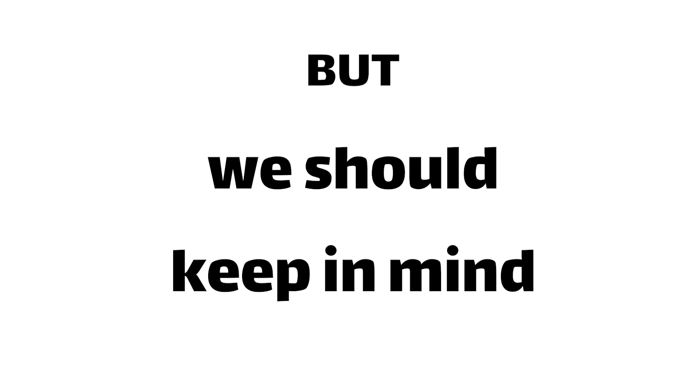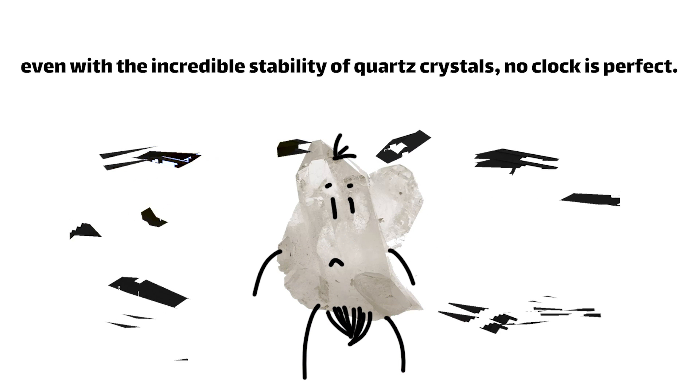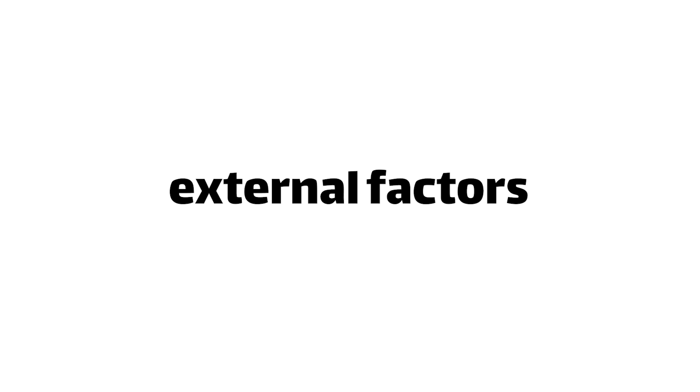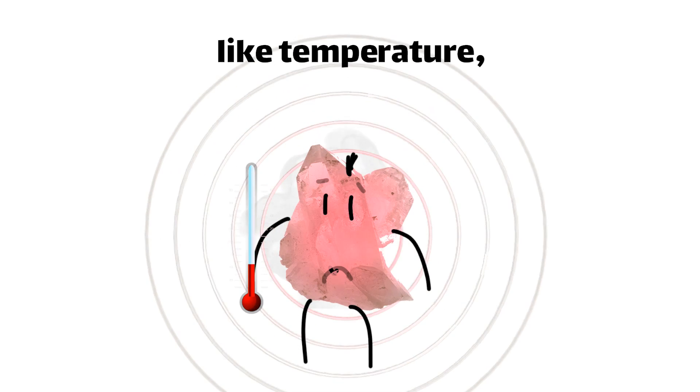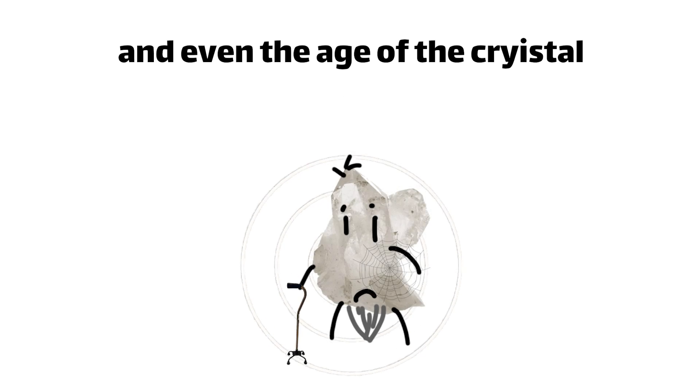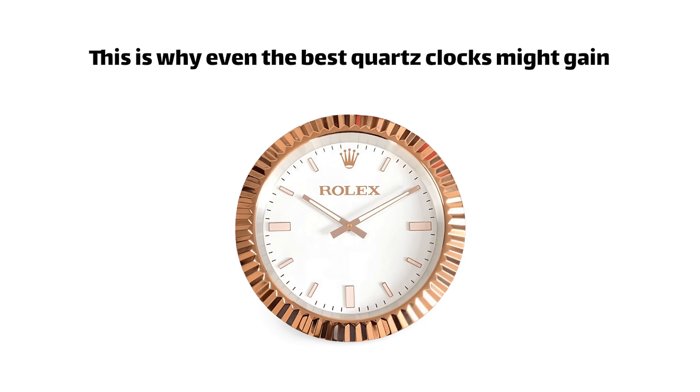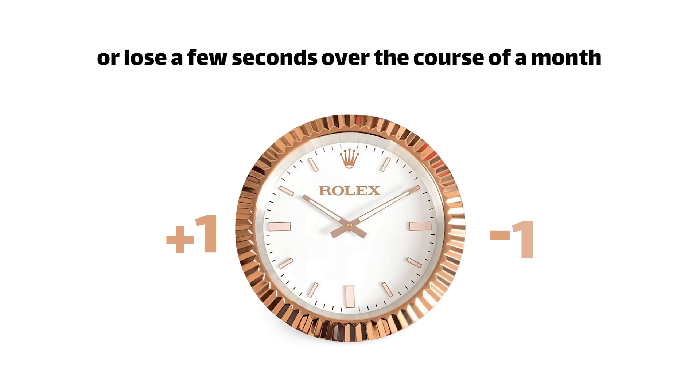But we should keep in mind that even with the incredible stability of quartz crystals, no clock is perfect. External factors like temperature, humidity, and even the age of the crystal can cause slight variations in the oscillation frequency. This is why even the best quartz clocks might gain or lose a few seconds over the course of a month.